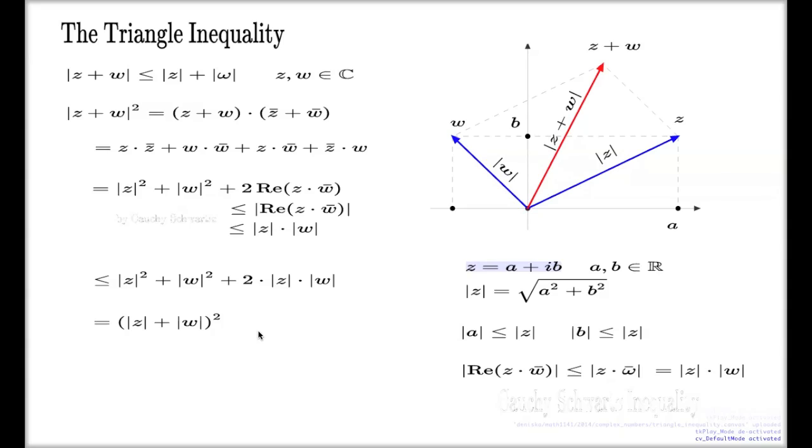Now, if you look at what we started with, we started with this expression. We did a few manipulations, a few arguments. There was some estimate on the way, and we ended up with this. If you take a square root of the left-hand side, if you take a square root of the right-hand side, you will end up with the triangle inequality.